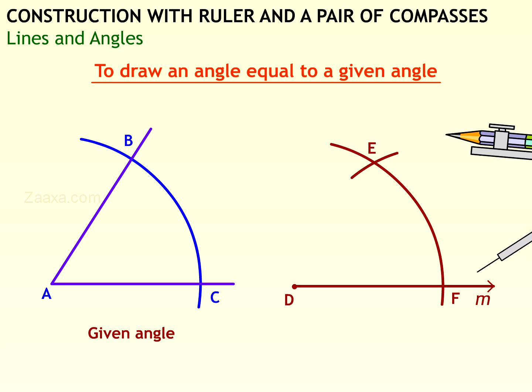F as center, draw an arc to cut the previous arc at E. Join D and E. You have now constructed angle EDF congruent to the given angle BAC.